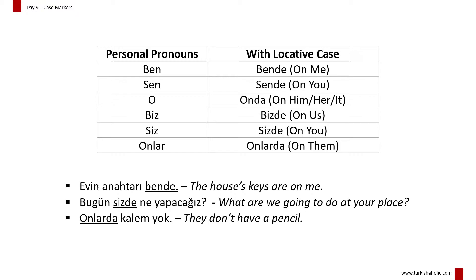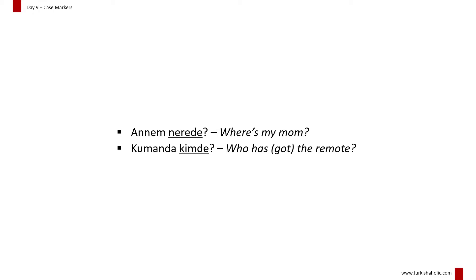Evin anahtarı bende. Bugün sizde ne yapacağız? Onlarda kalem yok. We can also make locative question words. The words 'nerede' meaning 'where' and 'kimde' meaning 'on whom' or 'whose' are made by adding the -de suffix to 'nere' and 'kim'. Annem nerede? Kumanda kimde?